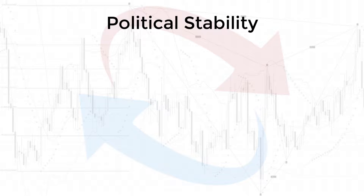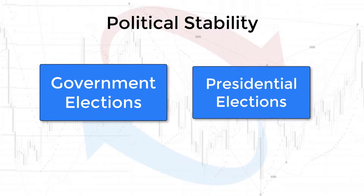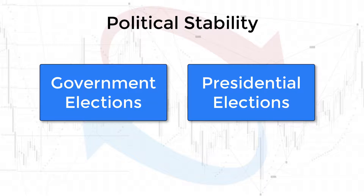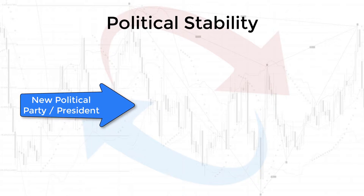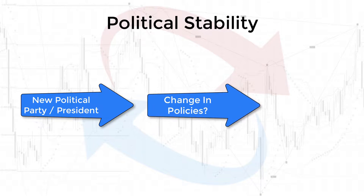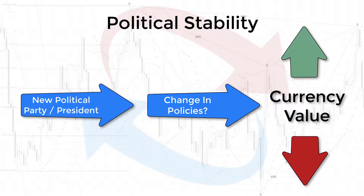Significant political events like government general elections and presidential elections can have huge effects within the currency markets. Markets generally like the status quo — a newly elected party or leader brings uncertainties because of potential policy changes. If the changes are perceived to benefit or hinder the country, the currency will rise or fall in value. Uncertainty means an increase in risk, and money will generally flow into safe haven assets and currencies like the Japanese yen and the Swiss franc.